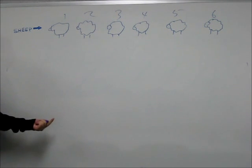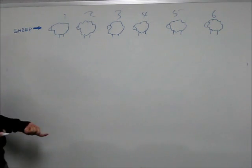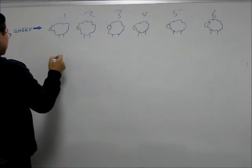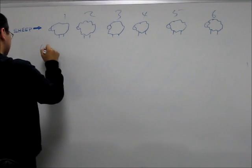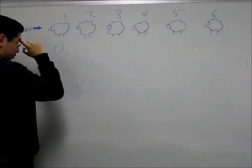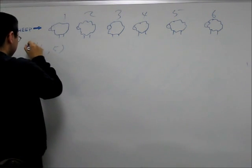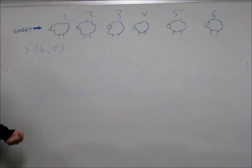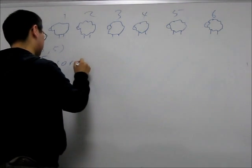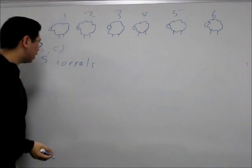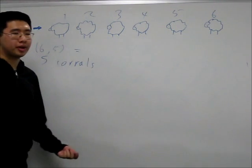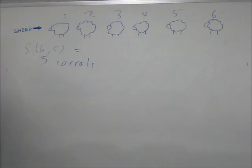So assuming that we're going to put sheep into all 5 corrals, 6 sheep... 5. If we're going to use all 5 corrals, then we're going to have S(6,5), in which case if you apply the formula, it's actually going to turn out to be 15.